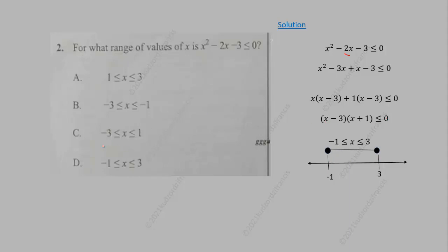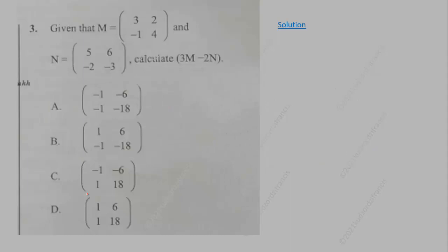If a test value did not satisfy the inequality, no value in that region would work and you would need to test the other regions instead. Moving on to question 3, we are given matrices M and N and asked to calculate 3M − 2N.